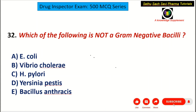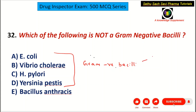Second question: which of the following is NOT a gram negative bacillus? Choices: A: E. coli, B: Vibrio cholerae, C: Helicobacter pylori, D: Yersinia pestis, E: Bacillus anthracis. E. coli, Vibrio cholerae, H. pylori are all gram negative bacilli. Other examples include Salmonella typhi and Shigella.